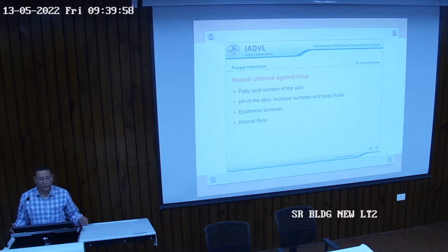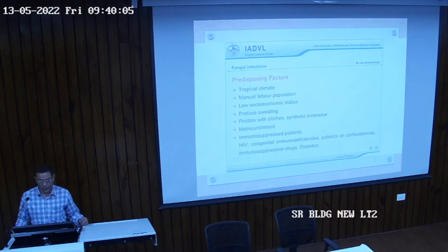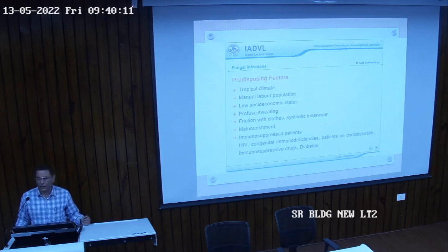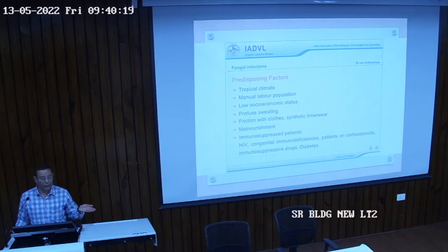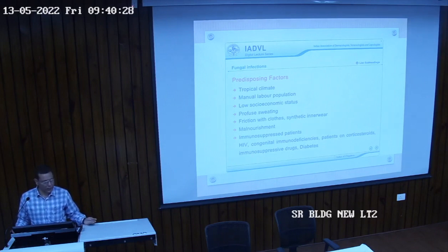Predisposing factors in fungal infection: one is tropical climate. Our climate is also very hot, with a lot of sweating, which predisposes to fungal infections. Manual labor populations — fungal infections are much more common in people who work outside in the sun with a lot of sweating. Those sitting inside air-conditioned chambers are well protected from such infections.